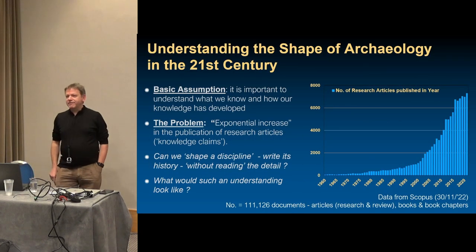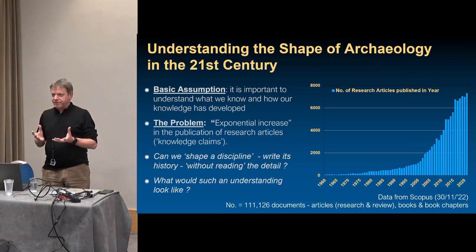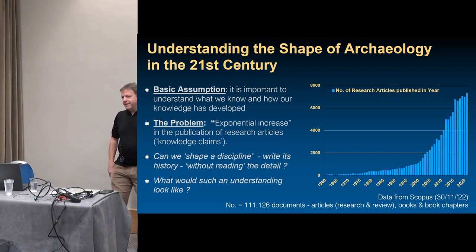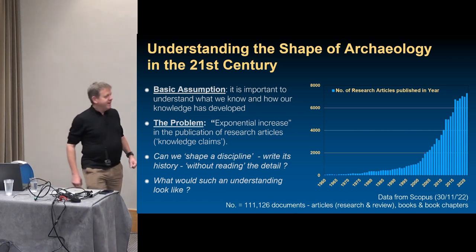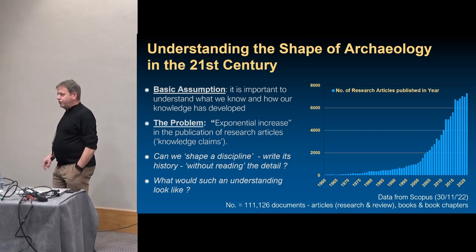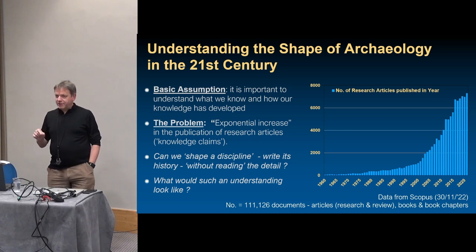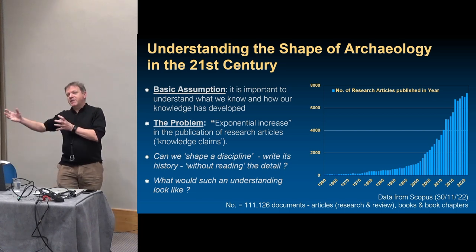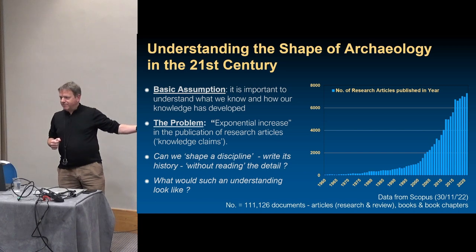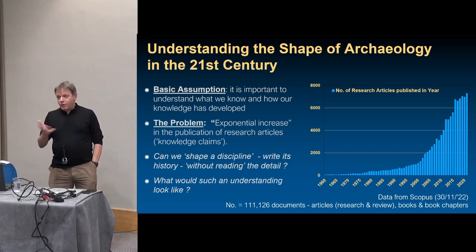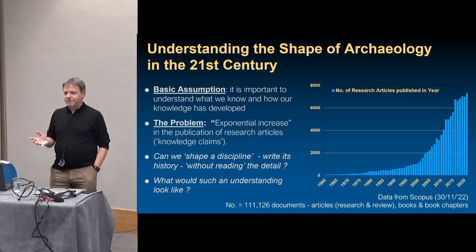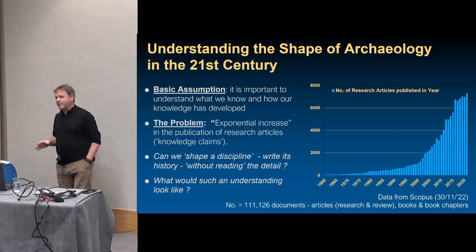Part of the reason we're not particularly aware of is just how much stuff we produce. These slides show the quantity of research pieces produced in a year, taking data from Scopus. In 2021, something like 7,420 pieces of research in archaeology were published. Scopus is biased towards English language, so it's missing a lot of European, African, and developer-funded work. How do we make sense of that?